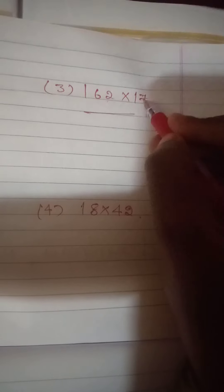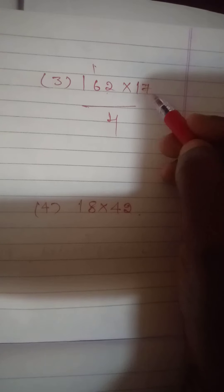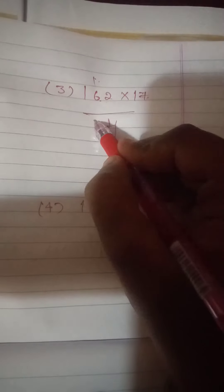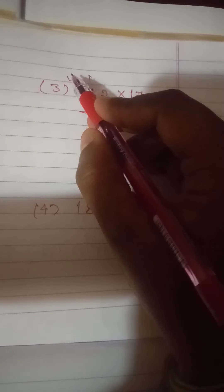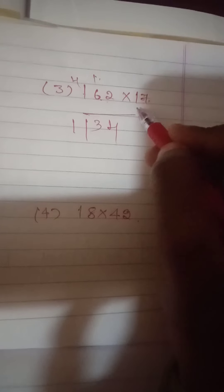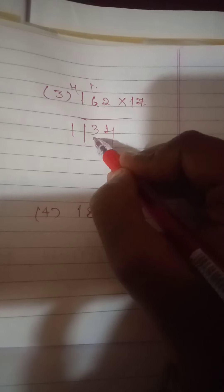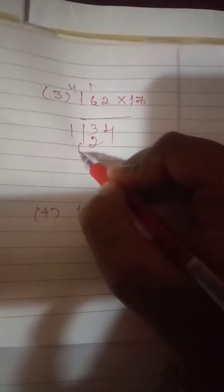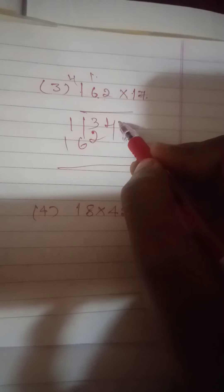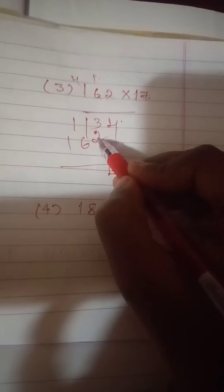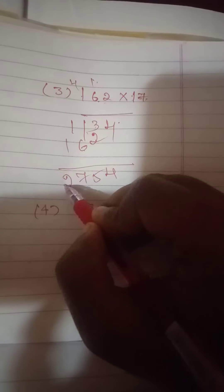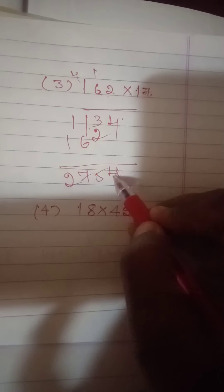Next: 162 into 17. 7 twos are 14, carry 1; 7 sixes are 42, 42 plus 1 is 43, write 3 carry 4; 7 ones are 7, 7 plus 4 is 11. Next: 1 two is 2, 1 six is 6; 11 is 4; 3 plus 2 is 5; 6 plus 1 is 7; 1 plus 1 is 2. Answer is 2754.